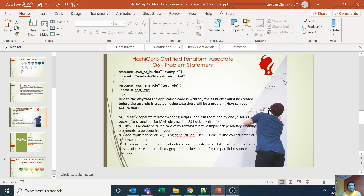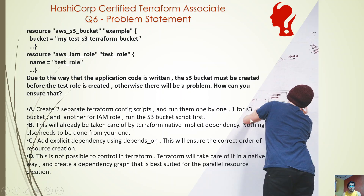Hello everyone, welcome back to the HashiCorp Certified Terraform Associate cloud certification catalyst program. We are back with question number six. In this question you will see that I have an AWS S3 bucket resource with the name 'example'. There is a logical name of the resource via which it can be addressed or referenced in this module, and 'bucket' is the name of the bucket. I also have another IAM role — so two resources are defined.